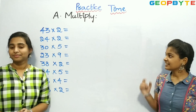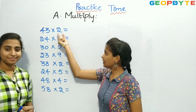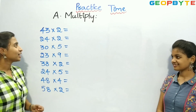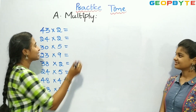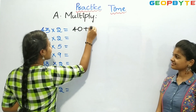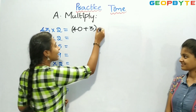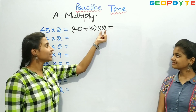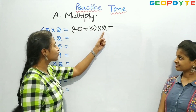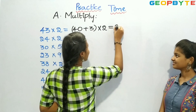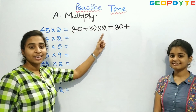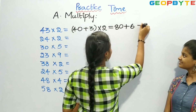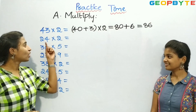Now let us see the next one: 43 into 2. Children, here 43 is the bigger number. So let us split 43 as 40 plus 3, into 2. We need to multiply 40 with 2 plus 3 with 2. 4 twos are 8, and we have a 0, so it is 80. Plus, 3 twos are 6. So 80 plus 6 is equal to 86. So 43 twos are 86.